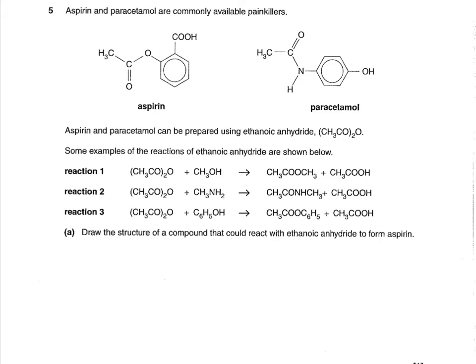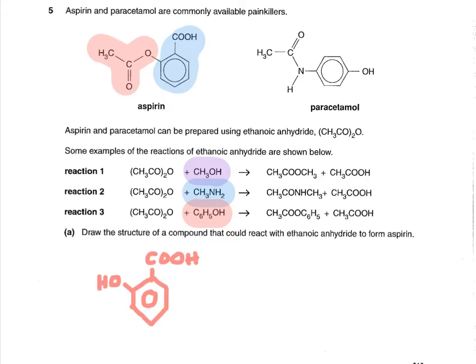The question asks you to draw the structure of a compound that could react with ethanoic anhydride to form aspirin. Aspirin is the one on the left — you can spot part of ethanoic anhydride within it. The compound needs to contain what's highlighted in blue. That compound is salicylic acid, though you don't need to know that name for this question. Clearly it contains a phenol group, so it's a phenol reacting with ethanoic anhydride.